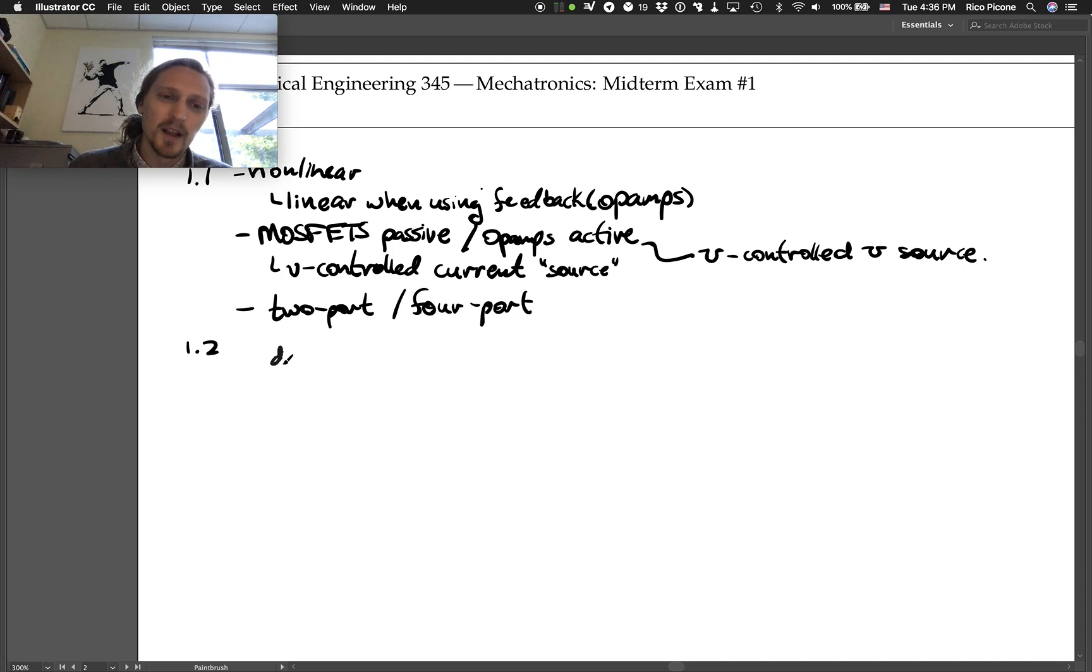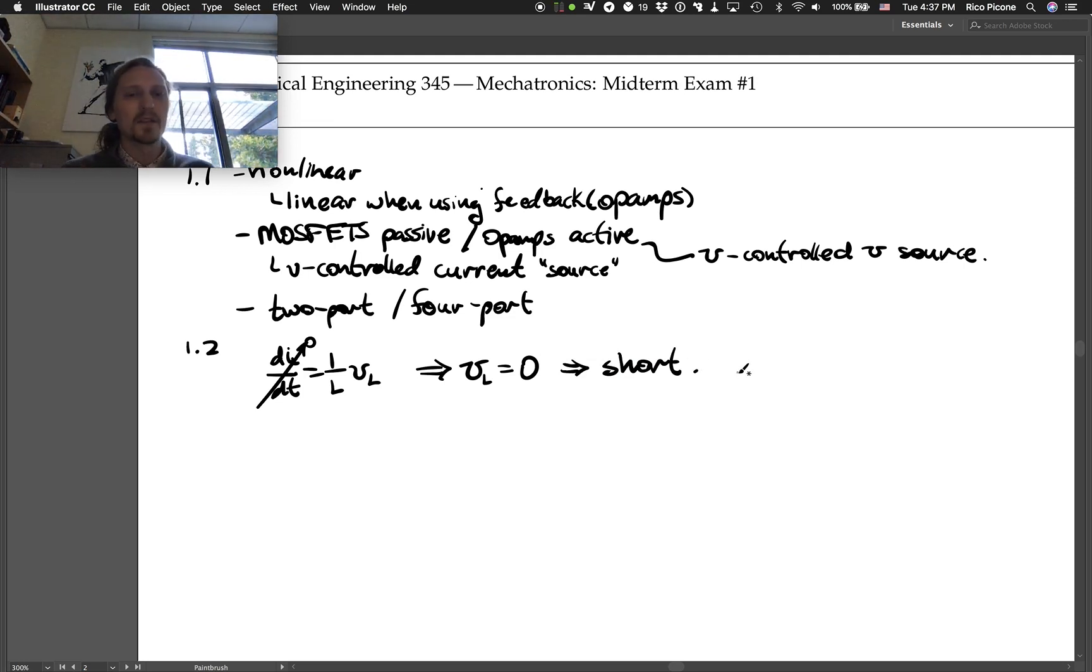And when that's the case, if you look at the inductor's elemental equation, DI_L/DT equals one over L times V_L, we see that if DI_L/DT is going to be zero because it's not going to change, I will be a constant zero. This implies that the voltage across the inductor will be zero, and that implies that this behaves like a short, right, or just a wire. So it just looks like a wire to a DC circuit in steady state.